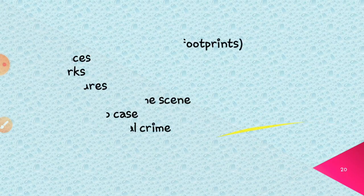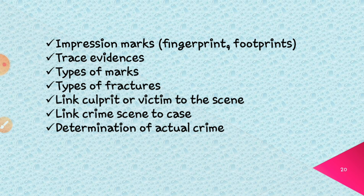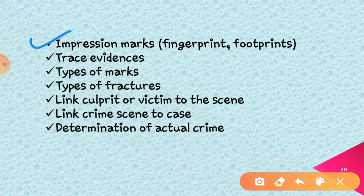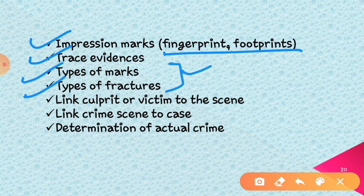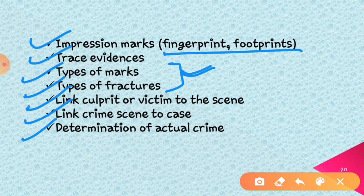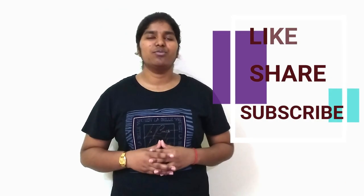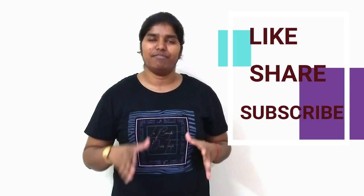Here are some other important pieces of information which are determined with the help of the examination of glass. The first one is impression marks: sometimes impression marks such as fingerprints, footprints, etc. are also present on the glass sheet, and their examination is very useful. Then trace evidences, types of marks, and types of fractures, which we already discussed in the previous slides. Glass is also very useful for linking the culprit to the victim, or for linking the crime scene to the case, and also for the determination of the actual crime scene. That is why glass is a very important trace evidence, and with the help of this we can determine so many types of important information. That is all for today's session, and I hope you all understand this topic very well. Thank you so much for joining me.